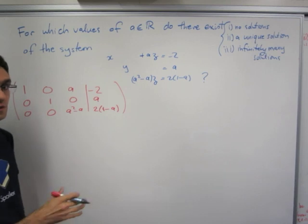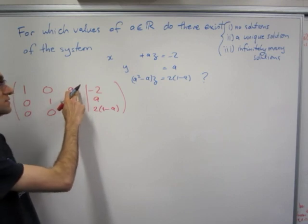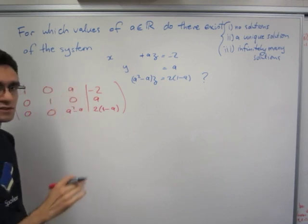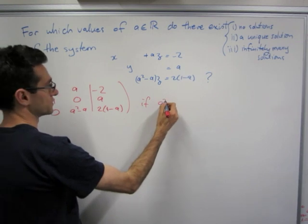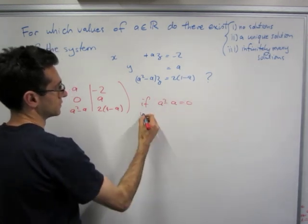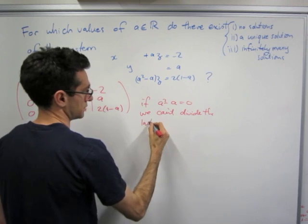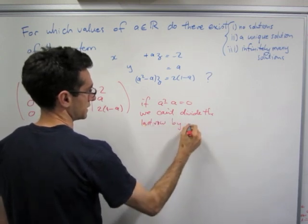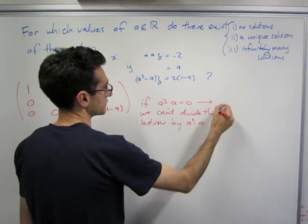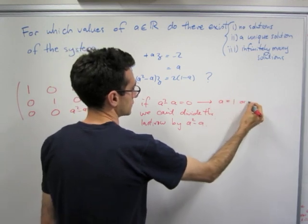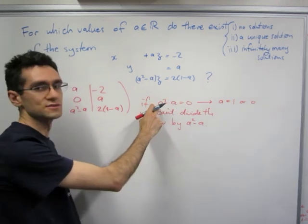So the most obvious row operation we might want to do is to make this a 1 and then cancel off the a. So we'll just forget about this a in the top corner here just for the time being. And as I said, if a squared minus a equals 0, we can't divide the last row by a squared minus a. And this is the case if a equals 1 or 0. So we can factor this as a times 1 minus a equals 0, and so either a is 0 or a is 1.